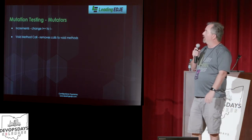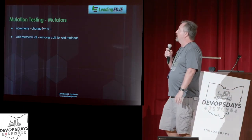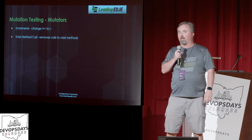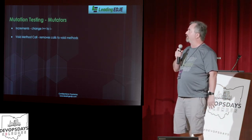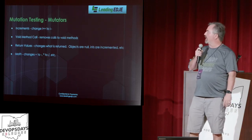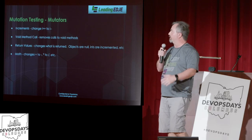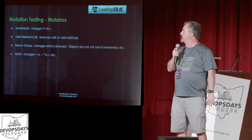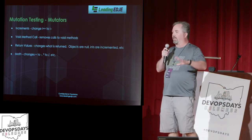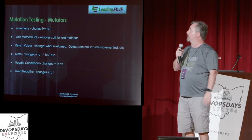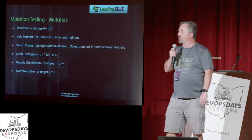So what are some mutators? It'll do things like change your increments — where you did plus-plus, it'll change that to minus-minus. It will remove calls to void methods, because maybe you didn't verify anything that happened in that void method. It'll change your return values, change things to null, insert incremented values, do some math stuff where it'll change pluses to minuses, multiplication to division. It's going through fiddling with your code then running the tests against it. It'll also negate conditionals.